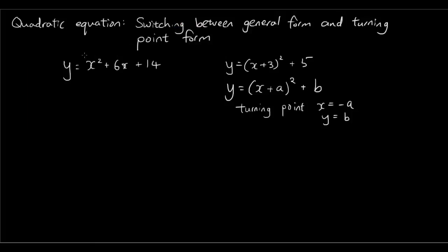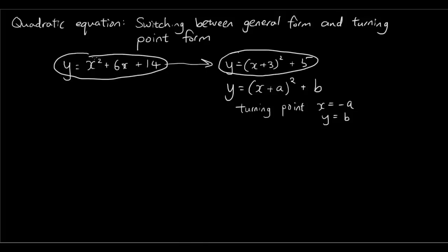So the question now is: how do I switch from general form into turning point form? Because once I rewrite the equation into turning point form, I can see where the turning point is without even drawing the graph. The process to switch from general form to turning point form is called completing the square — because we have a bracket squared, and so therefore this process is called complete the square.